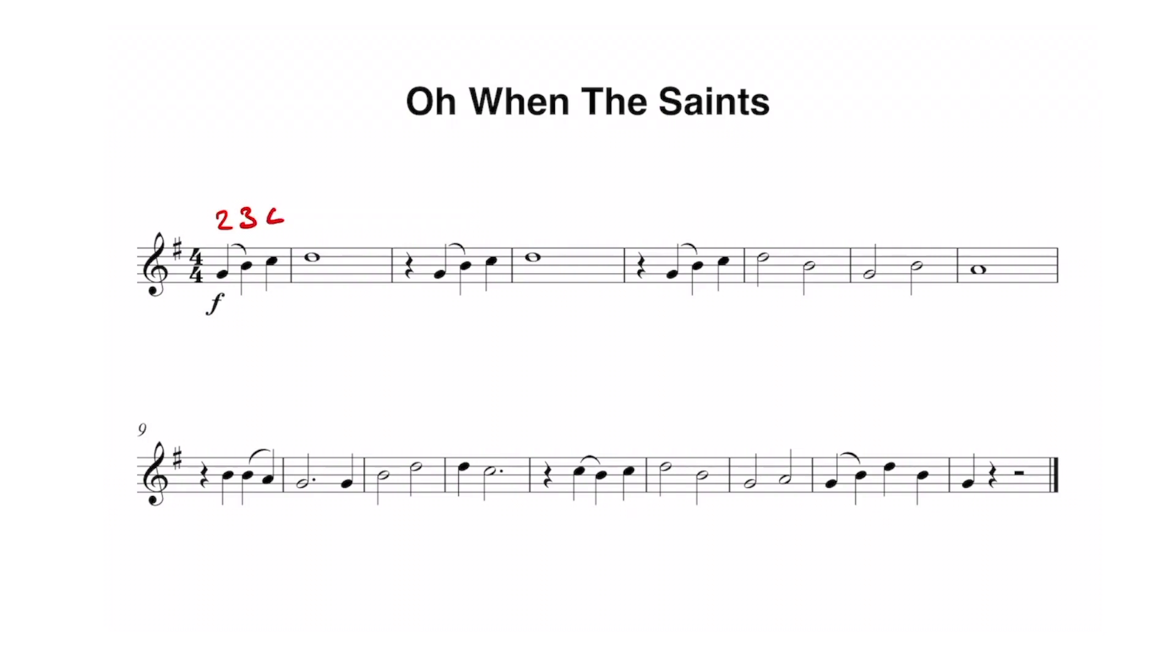We're also going to count a whole bar in before we play. So we count 1, 2, 3, 4, 1 and then we begin the piece. Instead of saying this out loud we would do this in our heads and breathe on the last beat, beat number one, before we play. This will sound a bit like this: 1, 2, 3, 4.